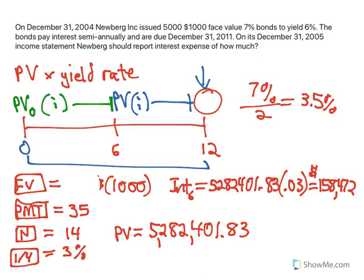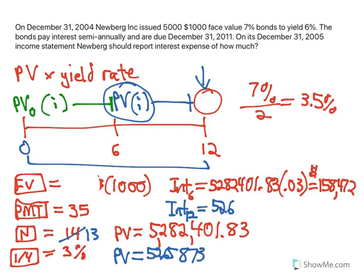So that's the interest expense that should be paid at time 6 months. And for the interest expense at time 12 months, we're going to add these two together. We need the PV at time 6, so I'll find that by doing this exact same calculator except I'm going to change the number of payments left to 13. That's the easiest way to find the present value. Just change N to 13, calculate the new present value, times by 5,000, and we get a new present value of $5,265,873.88.